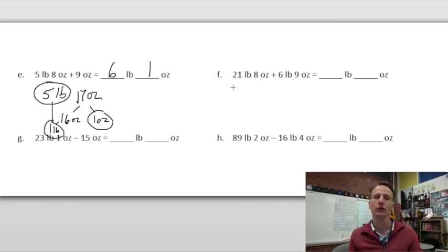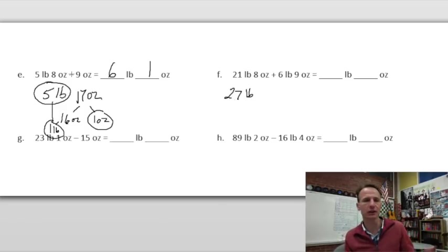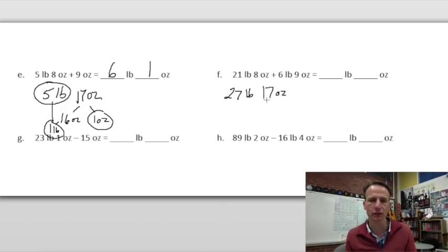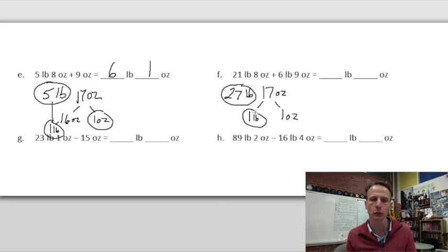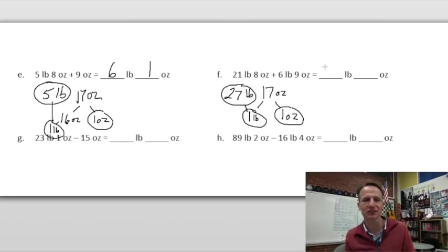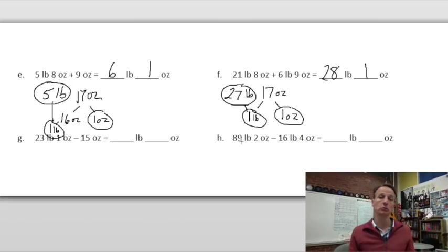Problem 1f: 21 pounds eight ounces plus six pounds nine ounces. Combine the pounds: 21 plus 6 is 27 pounds. Then eight plus nine is 17 ounces, which again decomposes to one pound and one ounce. So 27 plus one pound gives 28 pounds one ounce.